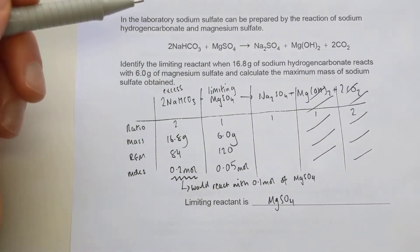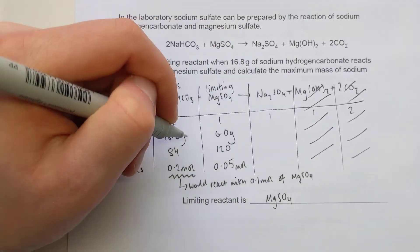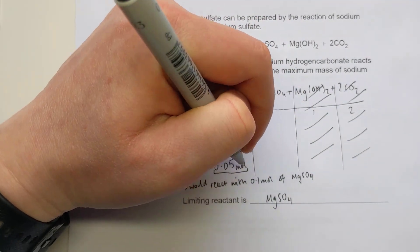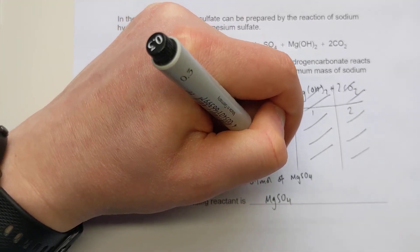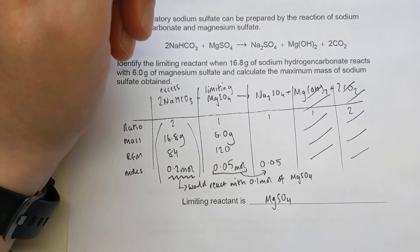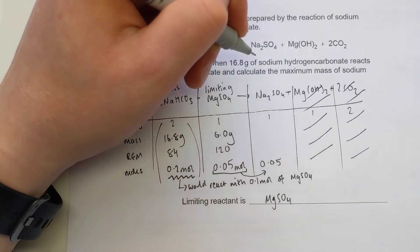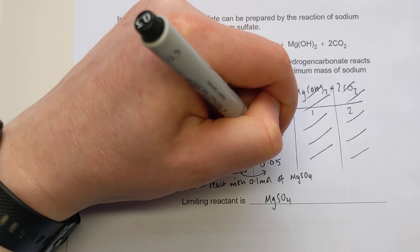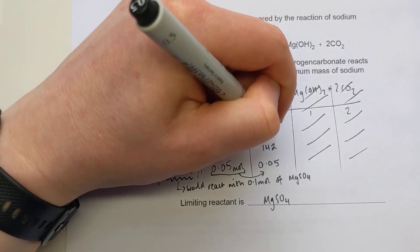Once you've worked out the limiting reactant, use it for the rest of the question - ignore the excess. Checking my ratio: it's one-to-one for magnesium sulfate to sodium sulfate, so it will be the same number of moles of the product. Then convert back to mass by multiplying by the RFM. Two sodiums: 2 times 23. A 32 for the sulfur. 4 sixteens for the oxygen. Gives an RFM of 142. 0.05 times 142 gives a final answer of 7.1 grams.